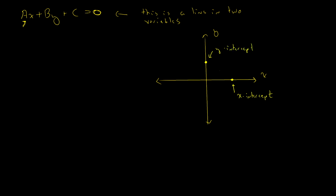When I am on the x-intercept, I have some value for x — however far out I am — but my y-value is zero. I have no height above the x-axis. When I'm on the y-intercept, my x-value is zero; I have no distance away from the y-axis, and my value tells me where I am on the y-axis. The x-intercept happens when y equals zero, and the y-intercept happens when x equals zero.